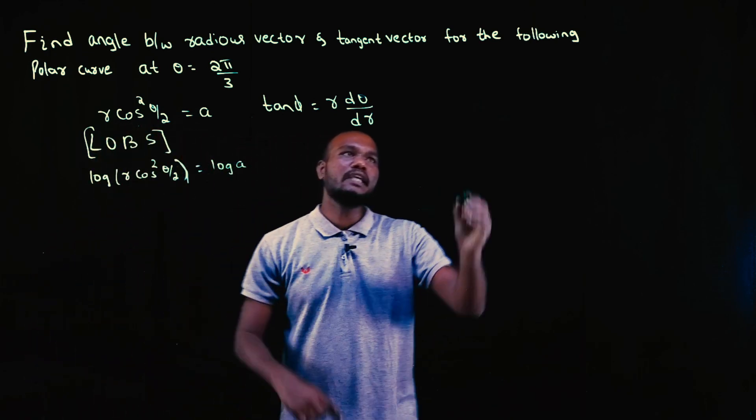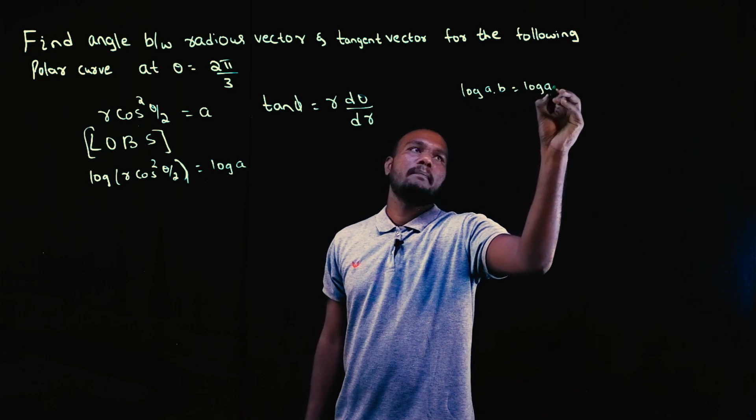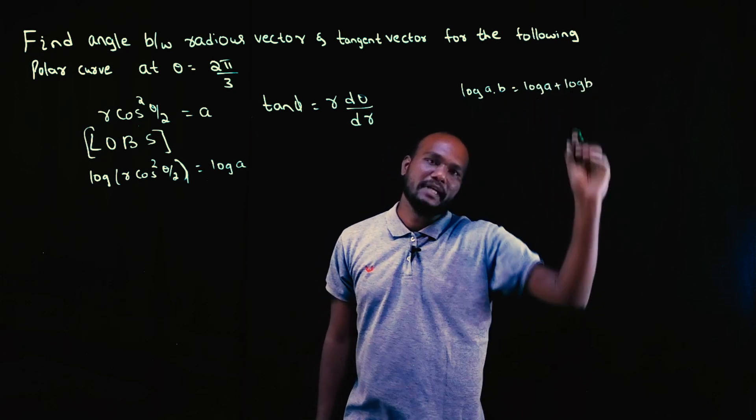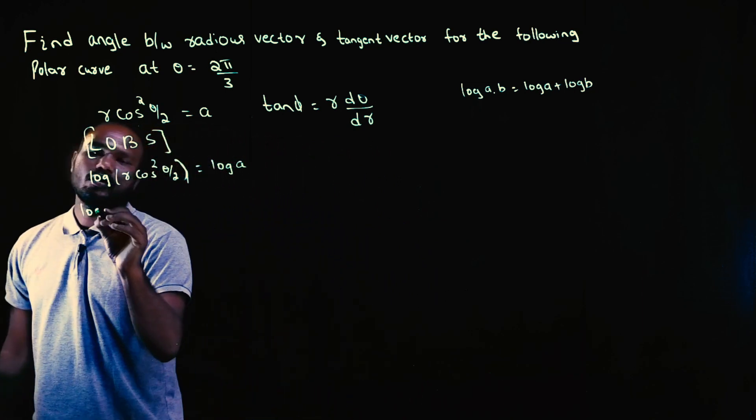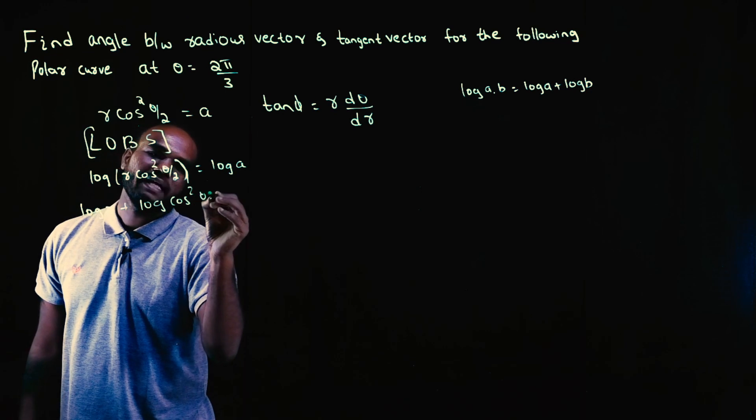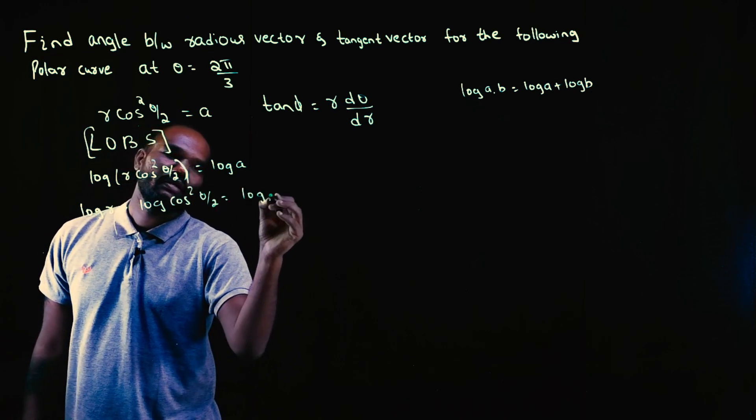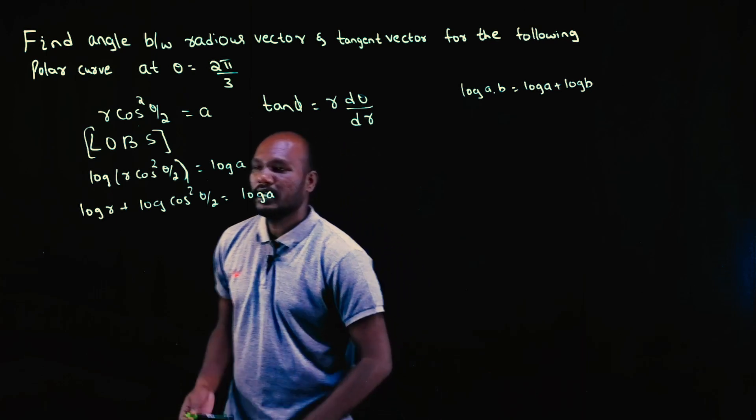Now, what is the formula log A into B? Log A into B is log A plus log B. This is the formula. So log R plus log cos square theta by 2 is equal to log A. This is the terms which we have come, right?